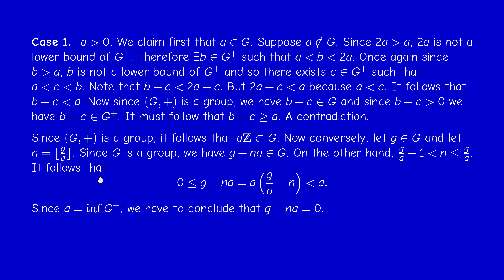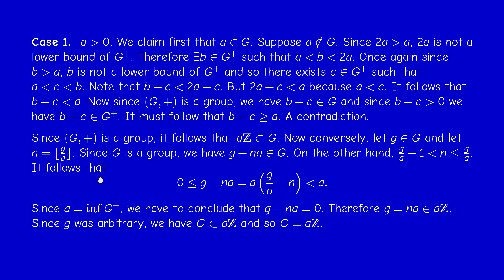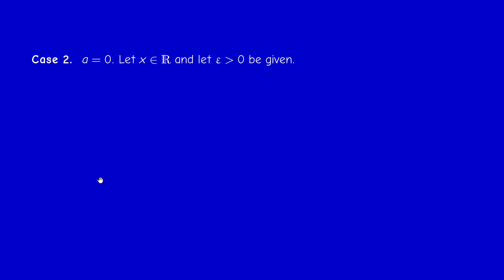So g - n·a = 0, therefore g = n·a, and therefore g belongs to aZ. We have a double inclusion, so in this case G is exactly of the form aZ. Second case: a = 0. Now we'll prove that G is dense.